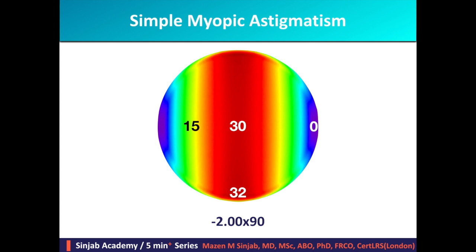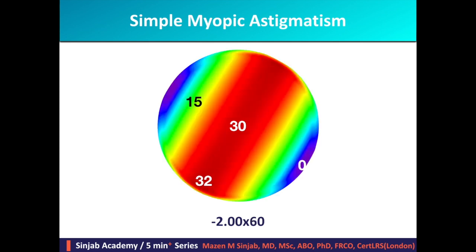This is an example of against-the-rule astigmatism: minus two at 90 — as you see the ablation profile is oriented vertically. This is a case of oblique astigmatism: minus two at 60 — as you see the ablation profile is oriented over the flat axis, which is 60.